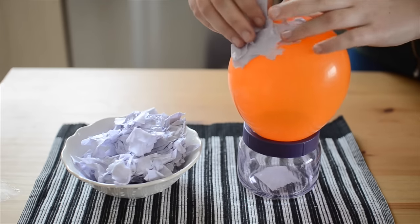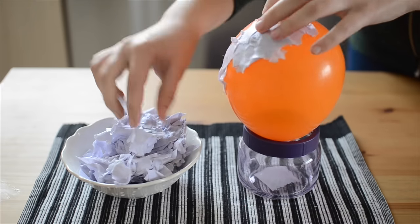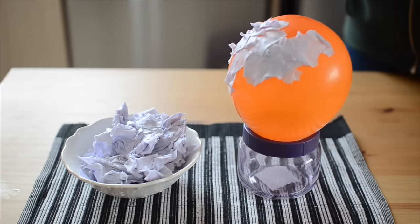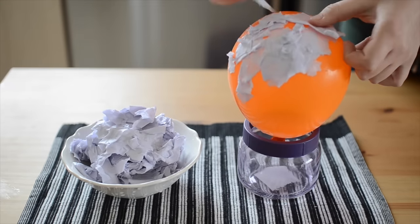Place your balloon into something that helps it stand upright and start covering it with the wet paper one piece at a time. Be sure to leave the balloon knot exposed so you can remove the balloon later.